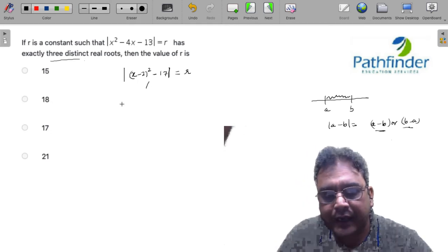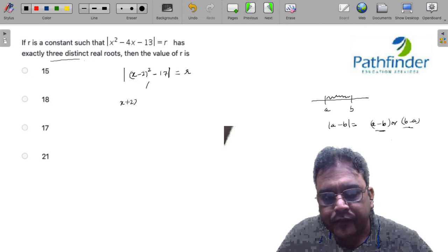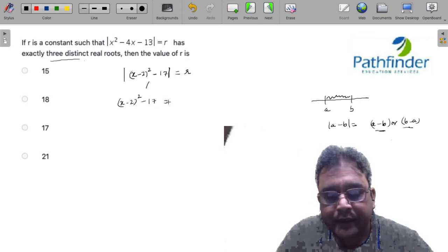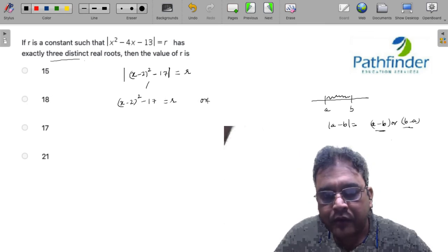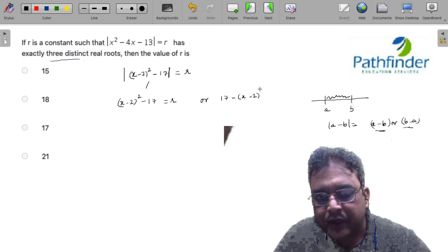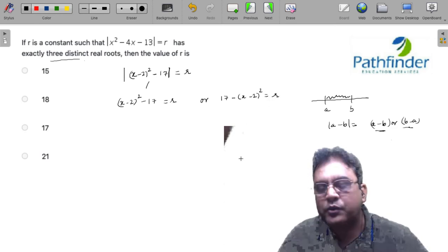So this means that either (x - 2)² - 17, which is the distance between (x - 2)² and 17, must be equal to r, or 17 - (x - 2)² = r.